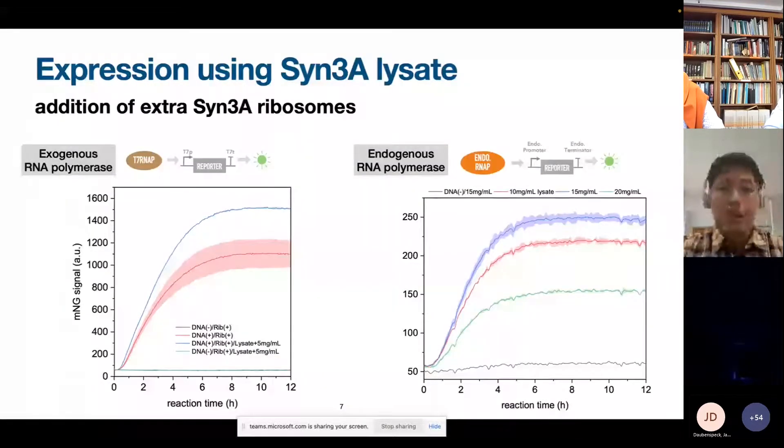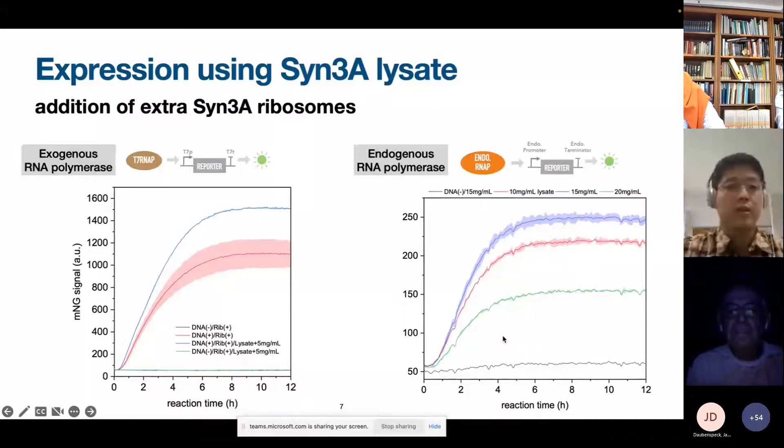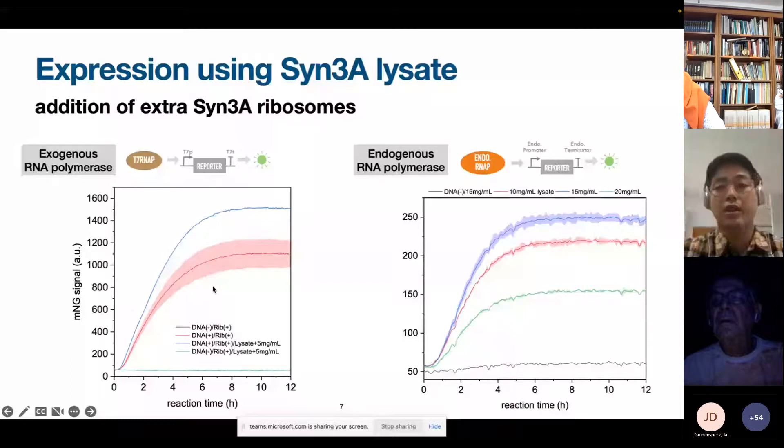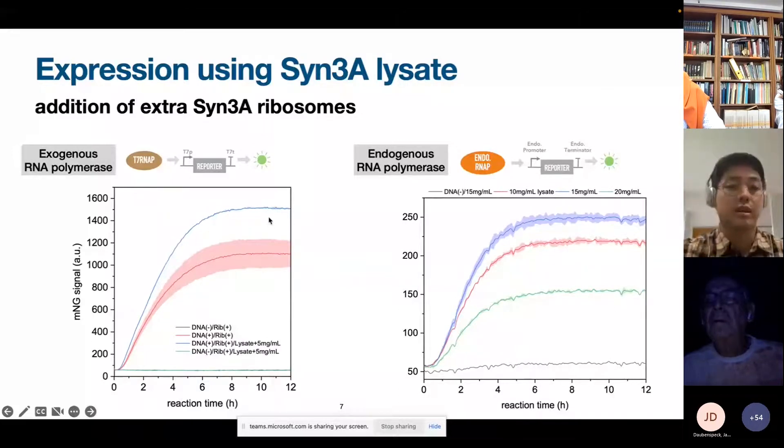So those are the very first graphs that we got about protein expression from SYN3A lysates. And we tested in two different conditions. The first condition we used exogenous RNA polymerases, in this case, T7 RNA polymerase. And our reporter gene here in this case is neon green. So we can track the fluorescence over time. And we can see expression of neon green over time. Here I just tested different conditions of concentration of protein. But in both cases, we can see expression of neon green.